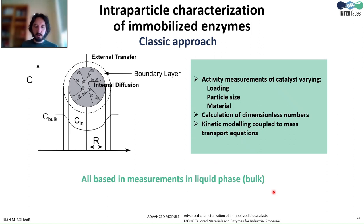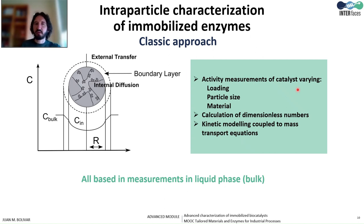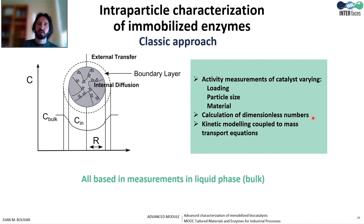The second group of reasons affecting the performance of immobilized enzymes is the internal microenvironment of the immobilized enzyme. This is a classic approach based on mass transfer resistances affecting the performance of immobilized enzymes. There are different experimental designs — for example, measuring the properties of the catalyst upon systematic variation of key design variables such as loading, particle size, and different materials. It is possible to calculate different dimensionless numbers confirming whether diffusion is controlling the performance of the immobilized enzyme, and of course it is possible to perform kinetic modeling coupled to transport equations.